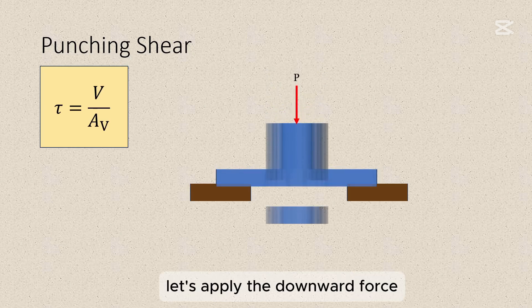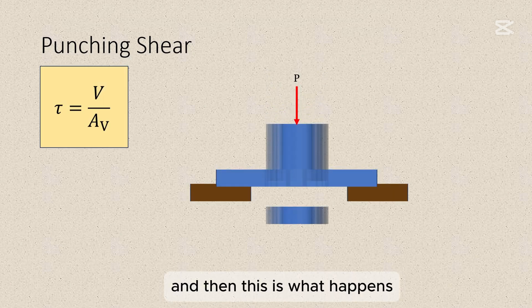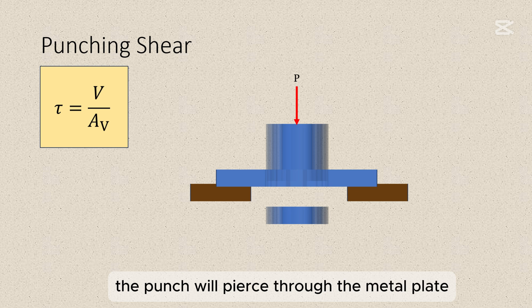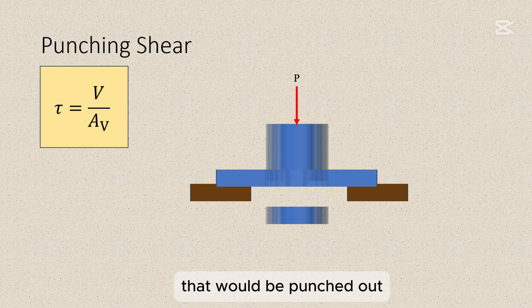Let's apply the downward force and then this is what happens. The punch will pierce through the metal plate. And so there's a portion of the sheet that would be punched out.